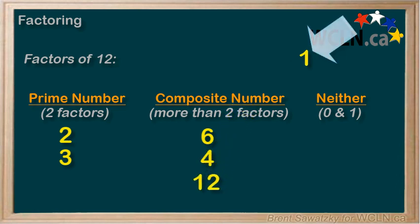Finally, 1. We might be tempted to call this a prime number, but if we think about it, the only way to multiply to get 1 is 1 times 1. If we list the factors, we'd only have one factor: 1. To be a prime number, we need two factors. Thus, 1 ends up being in the neither category.